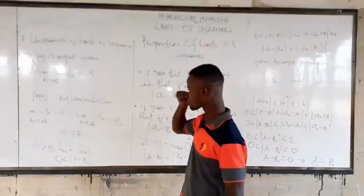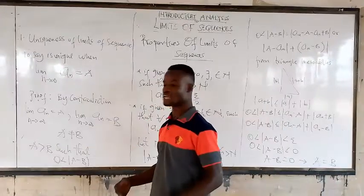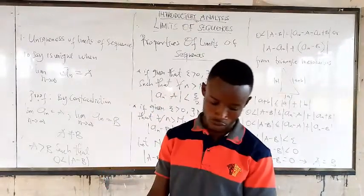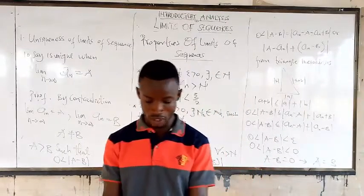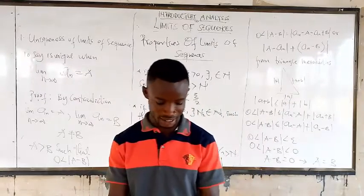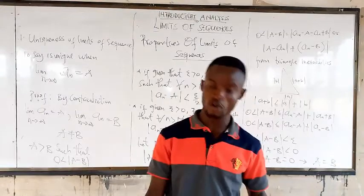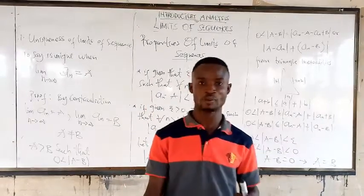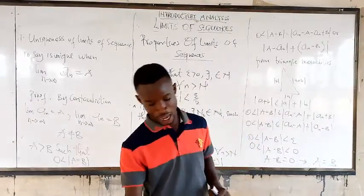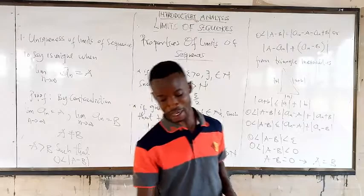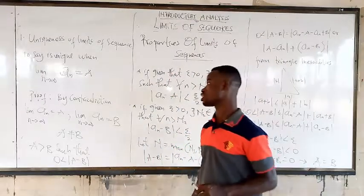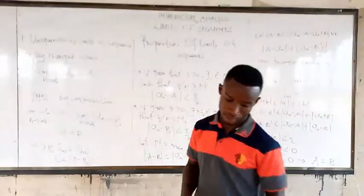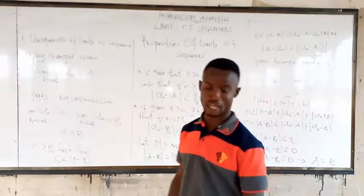So now, to prove, we have the types of proof. We have already looked at it and we know that we prove by contradiction, we prove by contraposition, and we prove by mathematical induction. So we are going to prove this by contradiction.